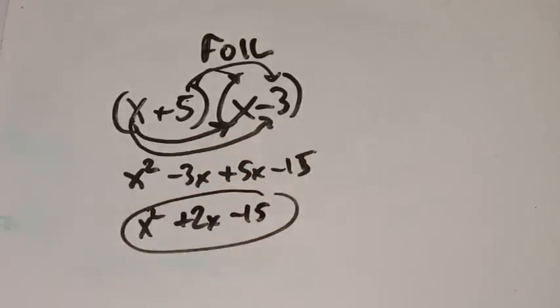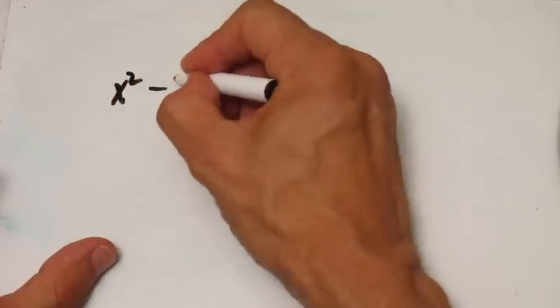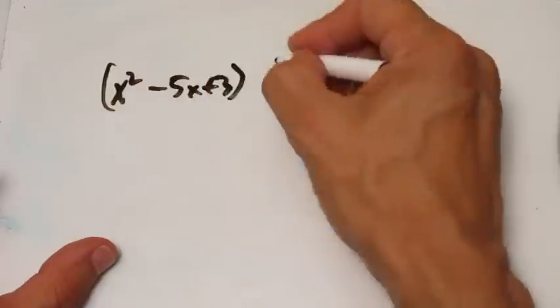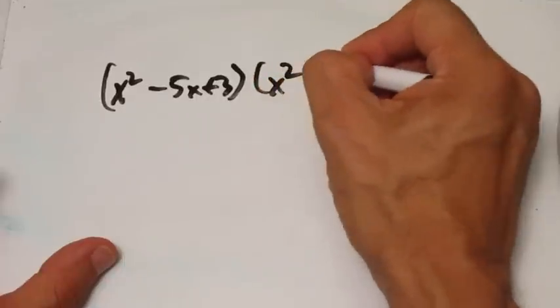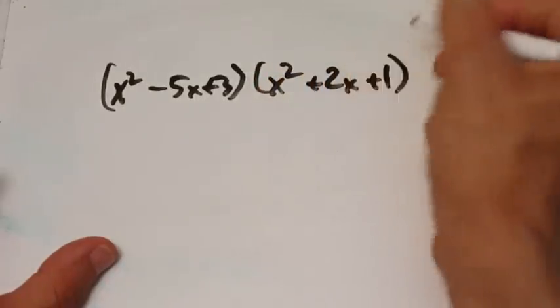Now that's not terribly difficult if you've got two binomials — it's not terribly complicated. But what if you've got something a little bit more complex, like x squared minus 5x plus 3 times x squared plus 2x plus 1?